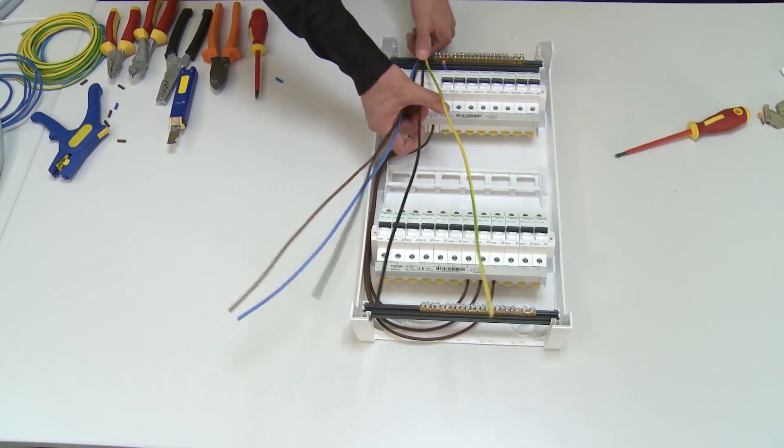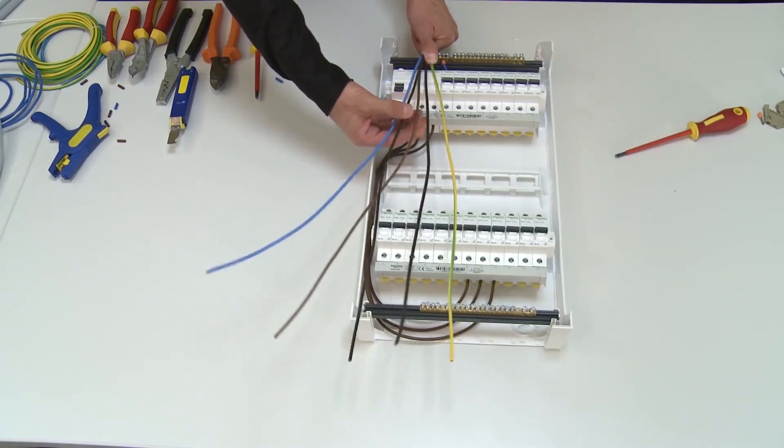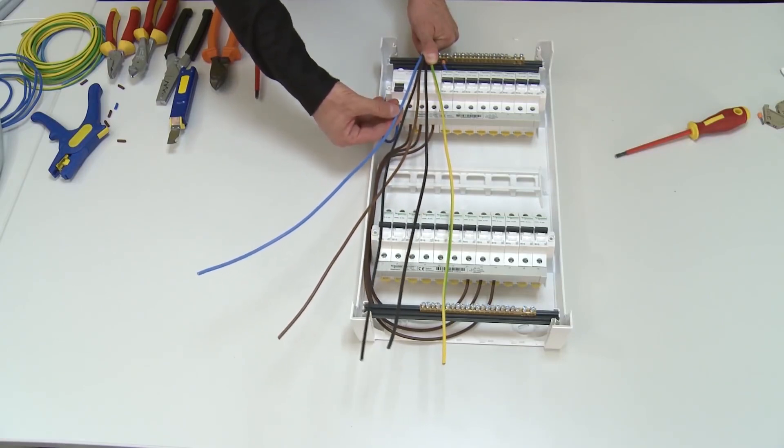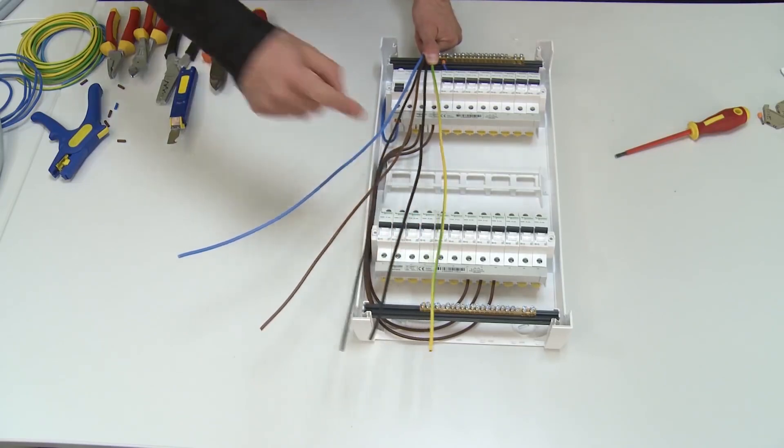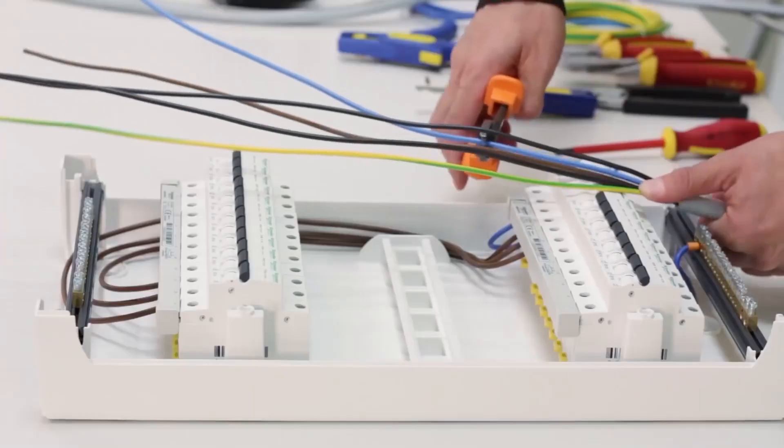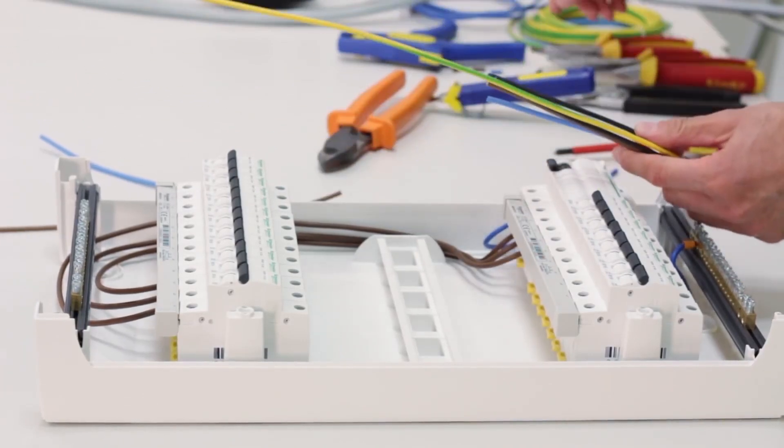So now we are going to shorten all the conductors that go into the RSD device. These are the three phase conductors and the neutral conductor. The grounding conductor remains the entire length as it reaches the grounding bus bar. We are now stripping the wires.